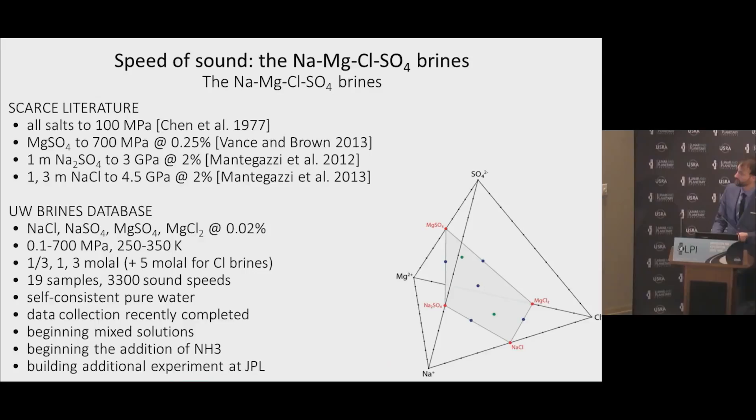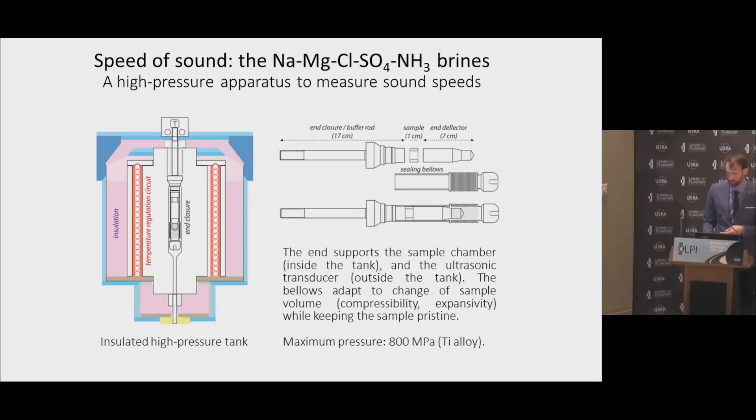And so by getting this kind of data, we can address a lot of problems in those models in which sometimes the activity of water, for example, is fit to data that are very sparse or very strongly scattered. So the plan is again to look at multiple different ionic systems. We've recently completed this phase diagram of magnesium, sodium, chlorine, and sulfate. At least the pure members, the outsides of this surface. And so we're beginning to look at the mixed systems. And then we'll have to reproduce all of this when we add ammonia to the system. And so we're doing that as well. And so in order to complete that more efficiently, we're building an additional experiment at JPL.